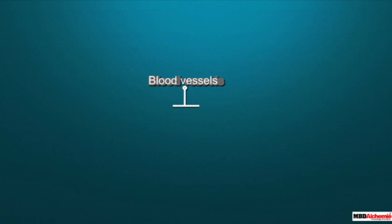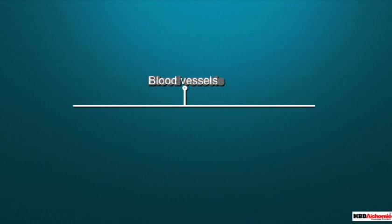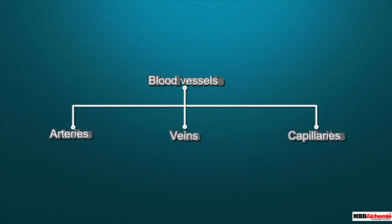Blood vessels provide a pathway for the blood to flow to different parts of our body. These blood vessels can be categorized into three categories: arteries, veins and capillaries.